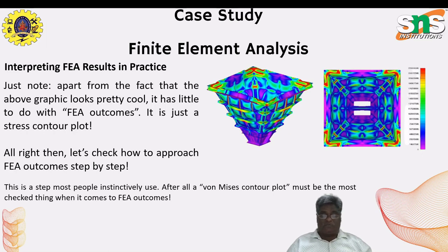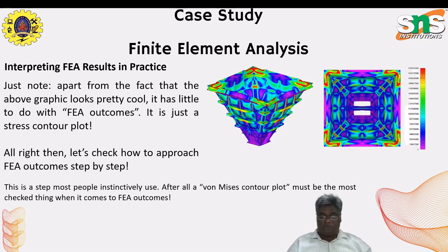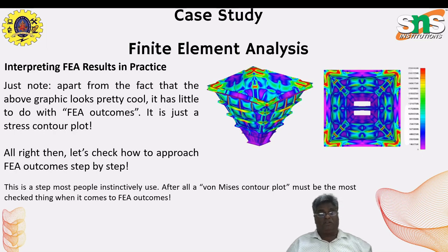Check the reaction forces, moments, residual, strain, energy norms, and force converging graph. Also check the convergence test. For the stress plot, post-process the relevant stress plot first — Von Mises stress plot is suitable for ductile material, and principal stress plot is suitable for brittle material. But also check all the stresses in case of any doubt about the result, or when finding the actual case of high stress values at a critical location.